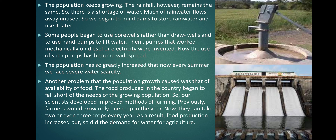Much of the rain water flows away unused, so we began to build dams to store rain water and use it later. Dams are wall constructions built on flowing rivers to store water. Some people began to use bore wells rather than draw wells, and hand pumps to lift water. Then pumps that work mechanically on diesel or electricity were invented, and the use of such pumps has become widespread.